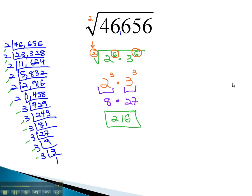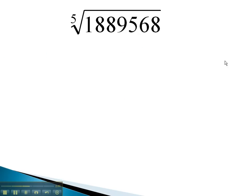Let's try another example with a higher index. In this problem, we want the 5th root of 1,889,568. We can do this again by finding the prime factorization.